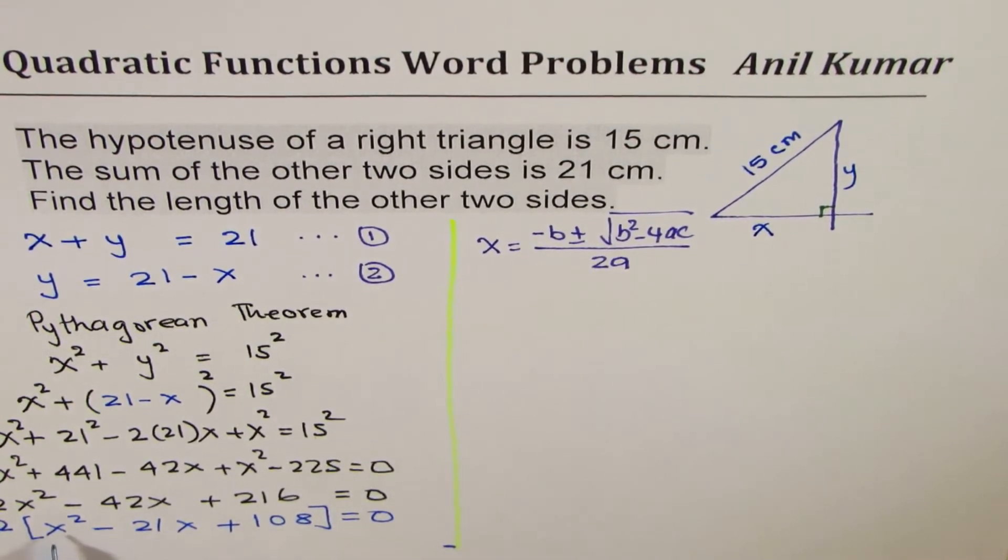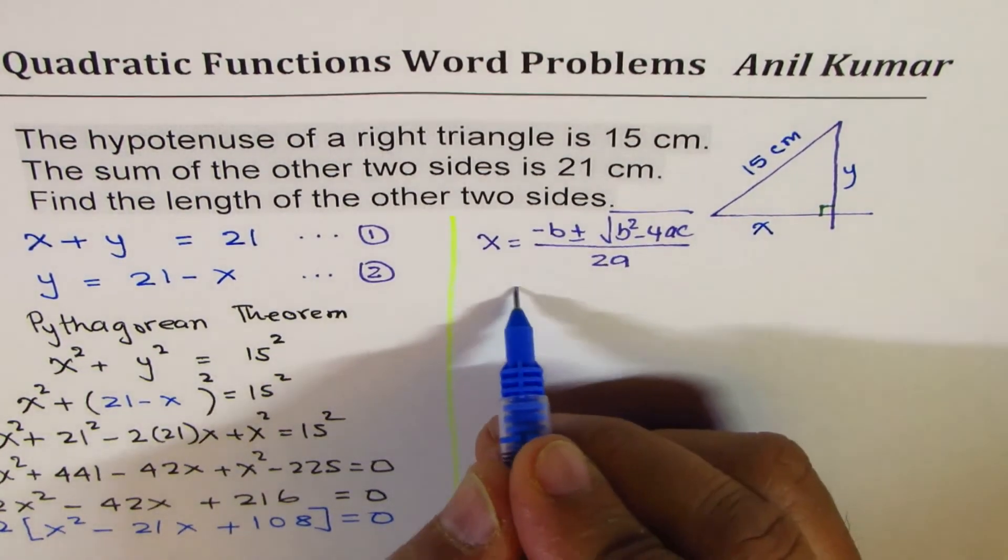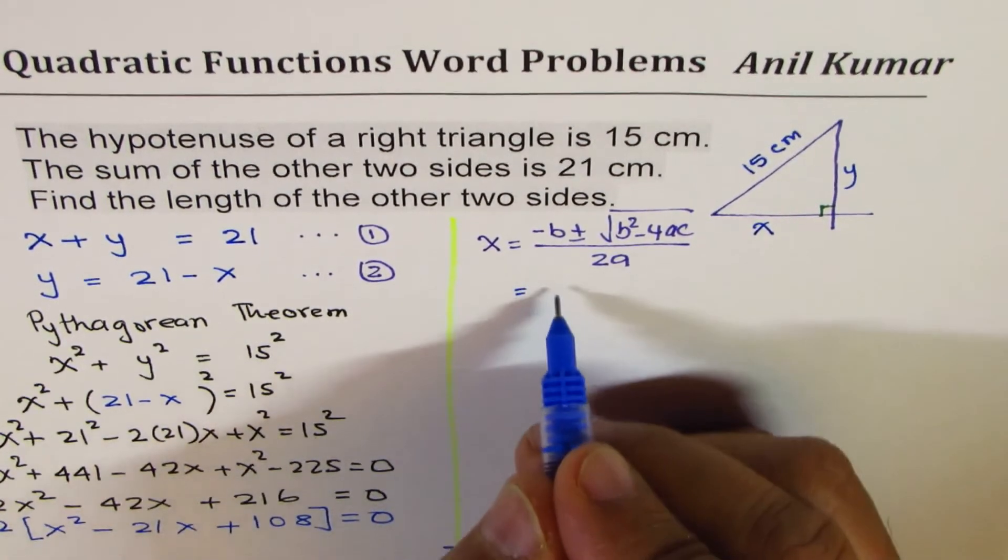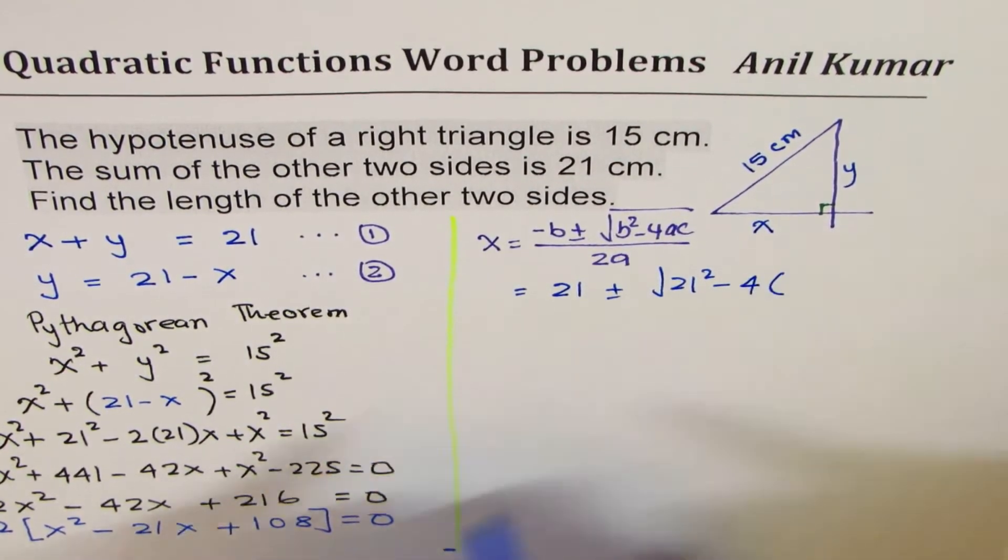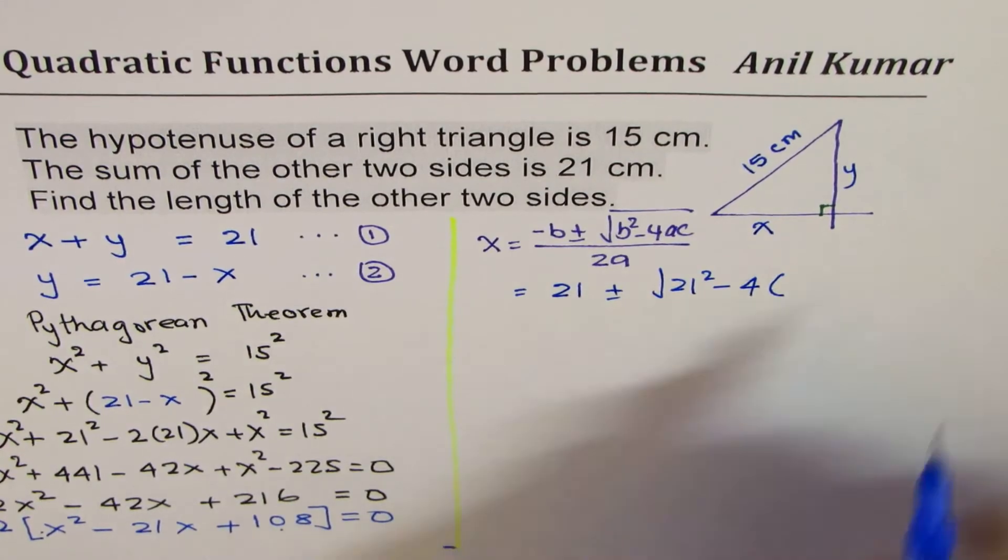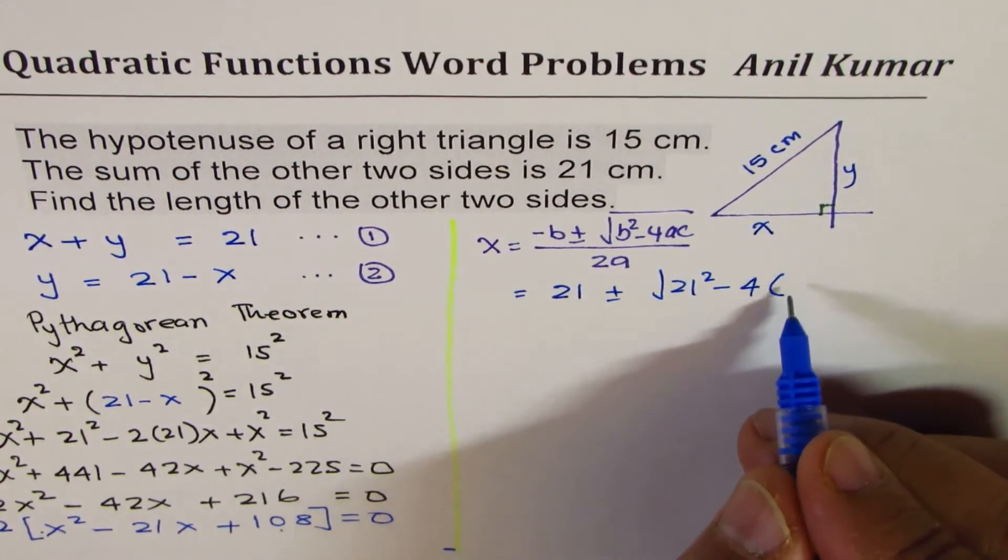So x² - 21x + 108 = 0. You can say, b is 21, so minus and minus becomes plus. So 21 ± √(21² - 4(1)(108)) divided by 2, and get the answer.